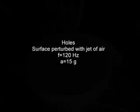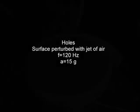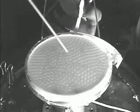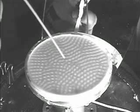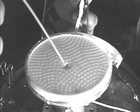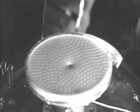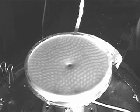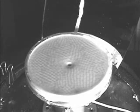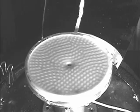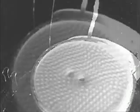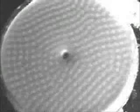Now we're going to shake the mixture with a fixed frequency and acceleration and apply a small puff of air. The puff of air creates an indentation. That indentation grows to a hole and it just sits there — the hole doesn't disappear. Here's a close-up showing that the hole actually penetrates the entire layer.